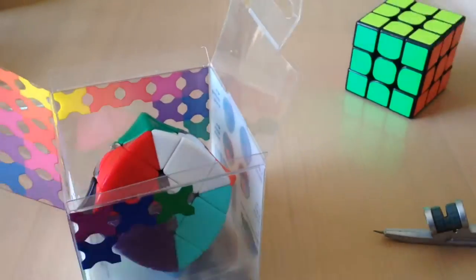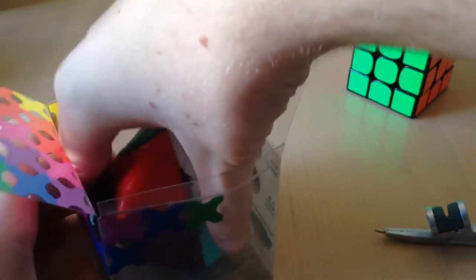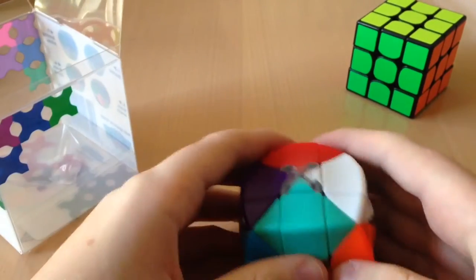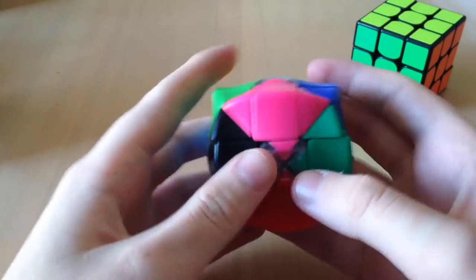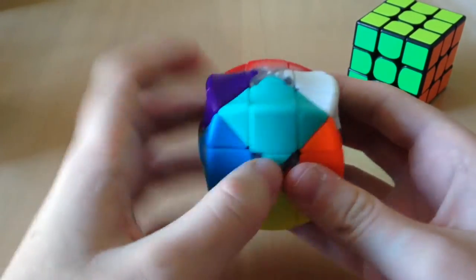Cube comes in this little plastic stand. Not really stand, but it keeps in place. And then the cube comes out like that. So the first thing I noticed about this cube is how many colors it's got. It's got 12 colors. Each edge has a different color.